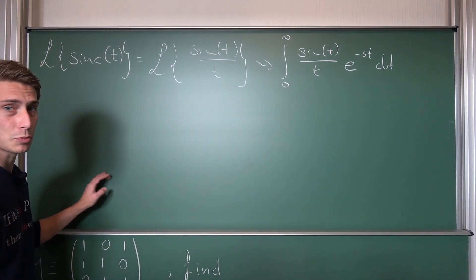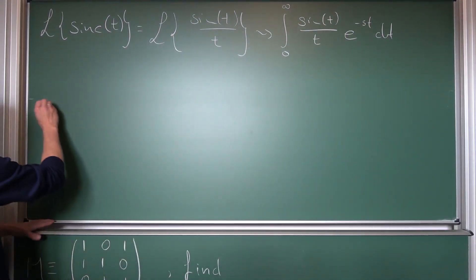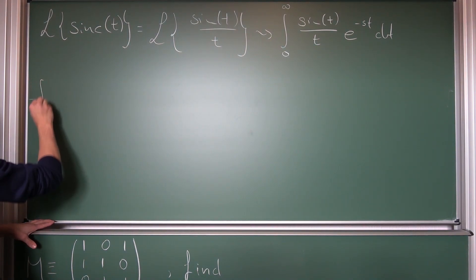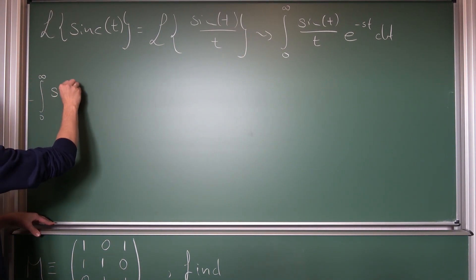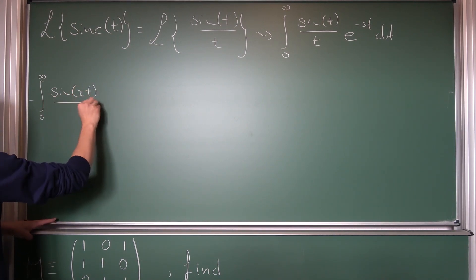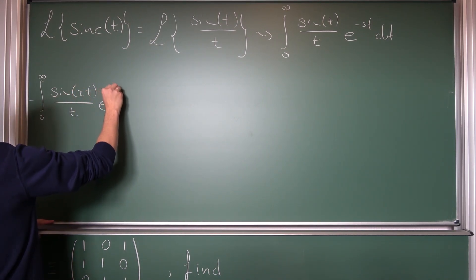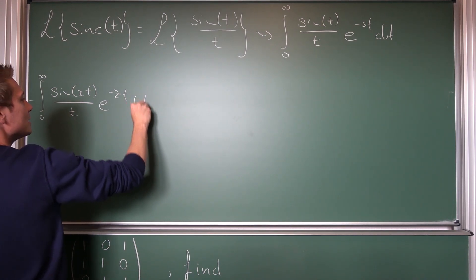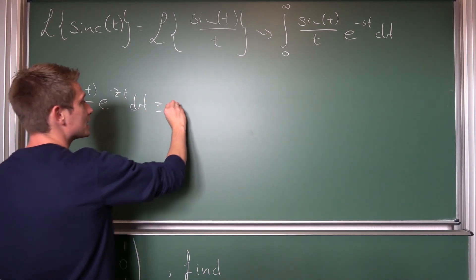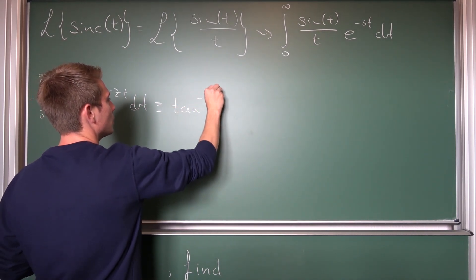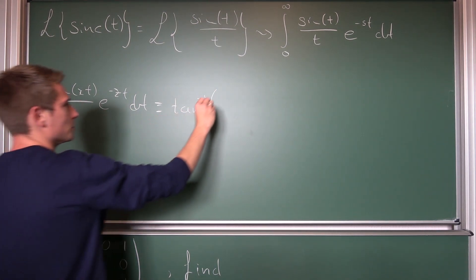Now, what was the result that we have derived this weekend? Well, it was that the integral from zero to infinity of sine xt over t times e to the negative zt dt is nothing but the inverse tangent of x over z.